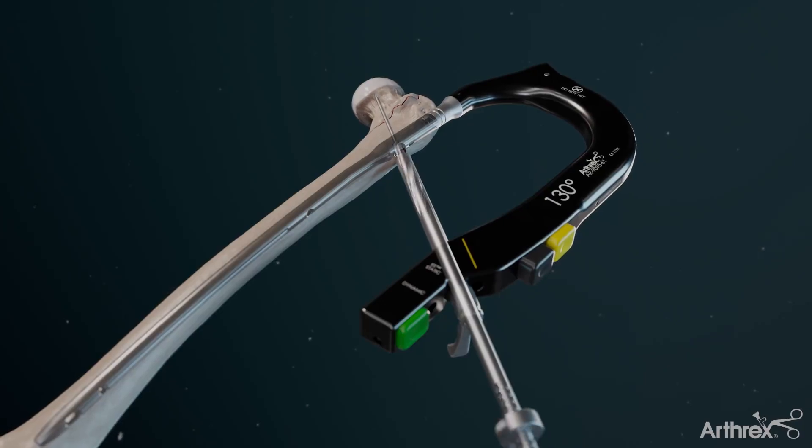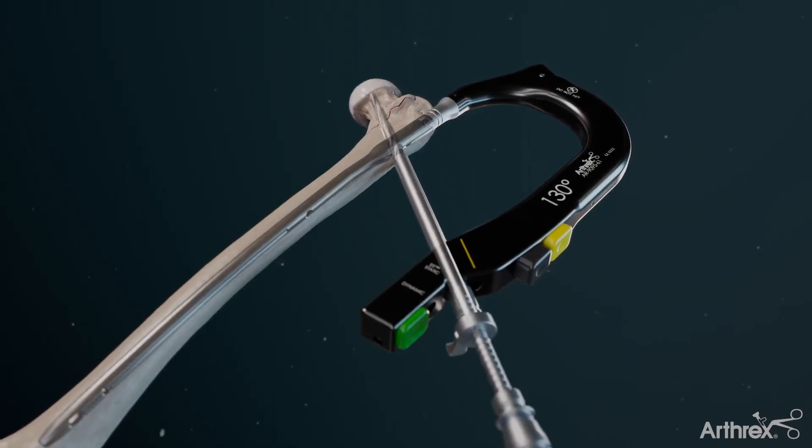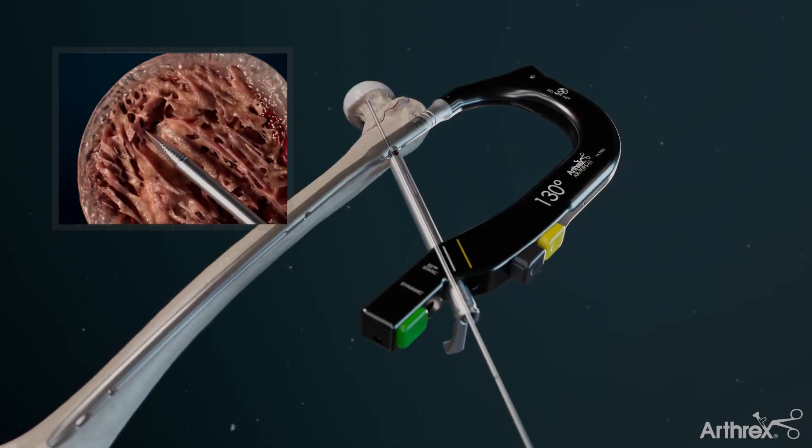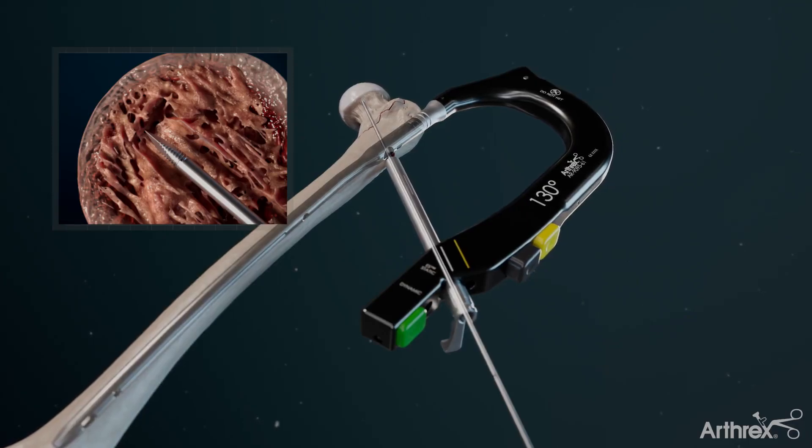Once reaming is complete, it's imperative to ensure the femoral head has not been perforated. This can be confirmed on fluoroscopic imaging. Once confirmed, augmentation can be pursued.